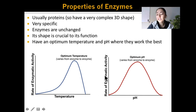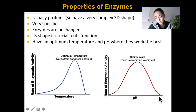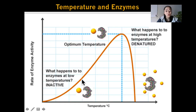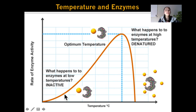You see the same relationship with pH. The rate of the reaction will increase to a certain pH, and then it will decrease because denaturation is happening at both extremes. And again, the optimum pH varies from enzyme to enzyme. At low temperatures, denaturation is not happening, but molecules move slower. In order for a reaction to happen, the substrate has to enter the active site of the enzyme.